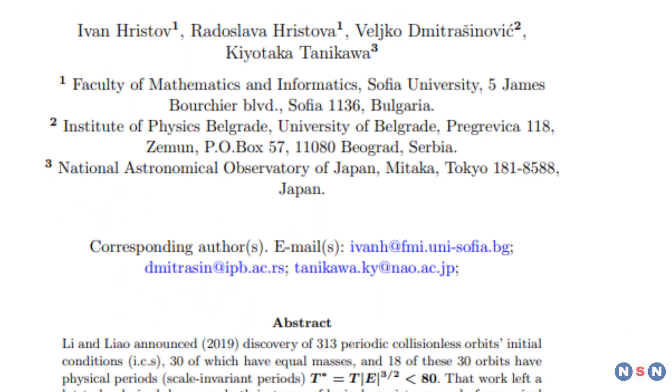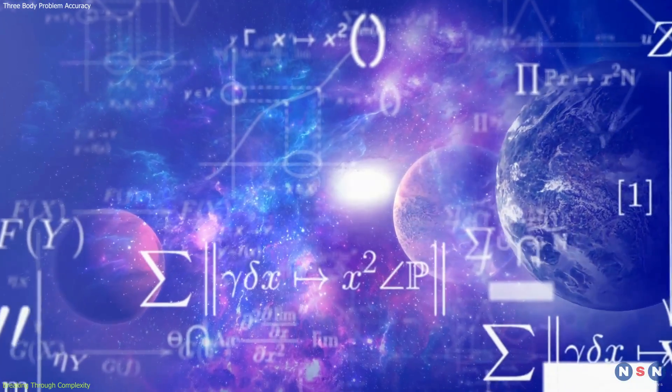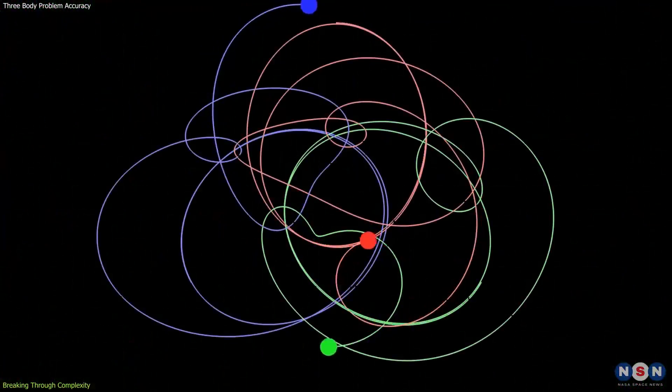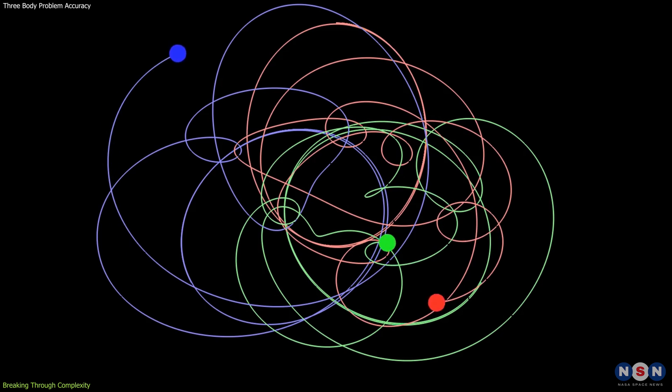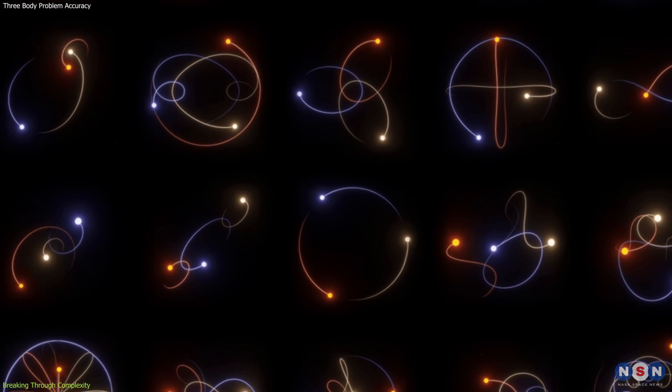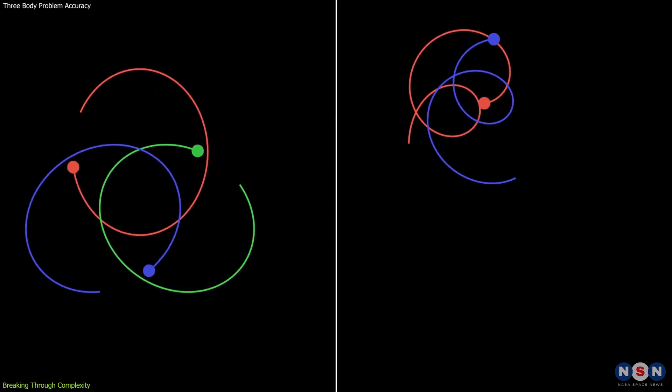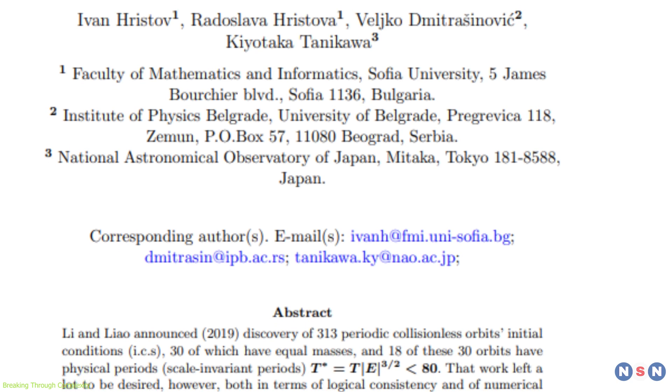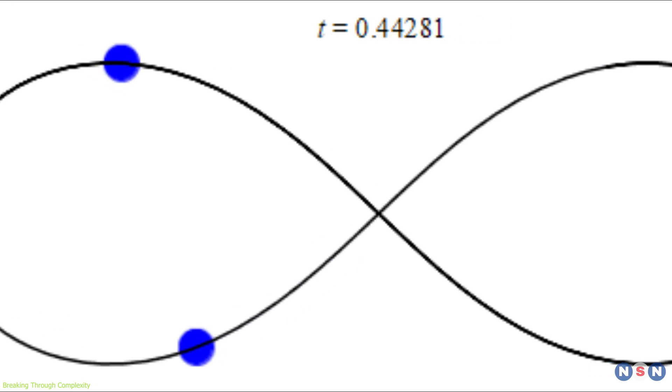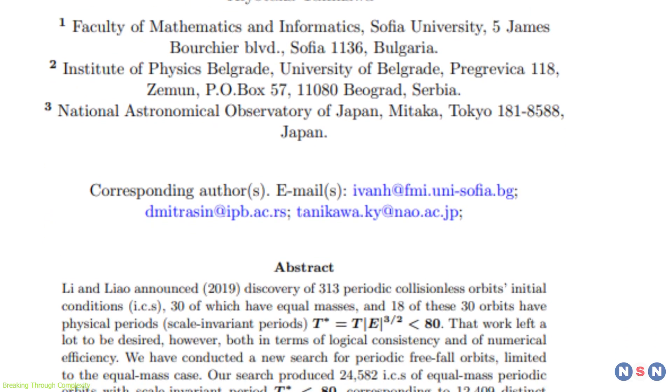The recent announcement of 12,000 new solutions to the three-body problem represents a monumental advancement in the field of mathematics and celestial mechanics. This breakthrough was led by Ivan Hristoff and his team, who utilized advanced computational technology to explore the intricate dance of celestial bodies under gravitational forces. These new solutions are not just numbers. They represent possible configurations and orbits that could occur in systems of three celestial bodies. The complexity and beauty of these solutions are profound, with patterns that could resemble anything from simple loops to tangled trajectories that defy simple prediction or classification. This discovery significantly expands the catalog of known solutions, which previously included only special cases like the figure-8 orbit or the collinear and Lagrangian points.